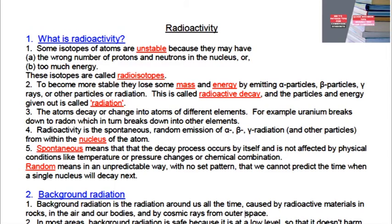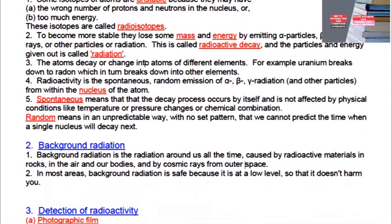Now let's look at background radiation. Background radiation is the radiation around us all the time, caused by radioactive materials in the rocks, in the air and our bodies, as well as cosmic rays from outer space. In most areas, background radiation is safe because it is at a low level so that it doesn't harm anybody.